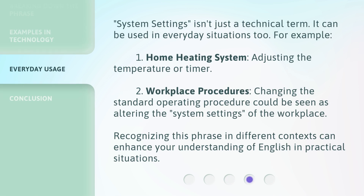System settings isn't just a technical term — it can be used in everyday situations too. For example: first, a home heating system — adjusting the temperature or timer. Second, workplace procedures — changing the standard operating procedure could be seen as altering the system settings of the workplace. Recognizing this phrase in different contexts can enhance your understanding of English in practical situations.